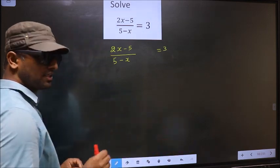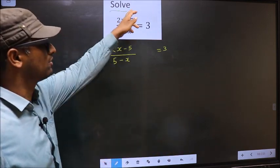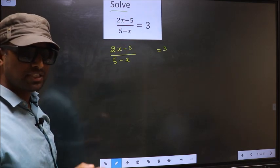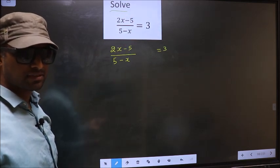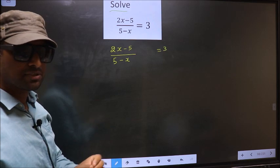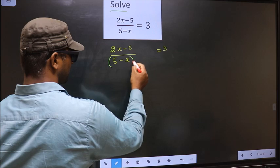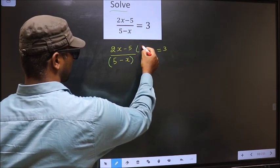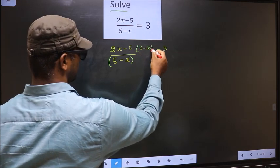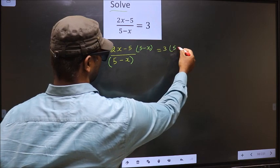Now here they told us to solve, which means we should find the value of x. For that, first we should get rid of the denominator. So to remove 5 minus x from the denominator, you multiply by 5 minus x on both sides.